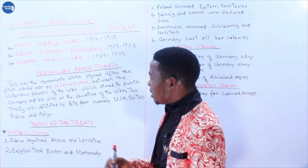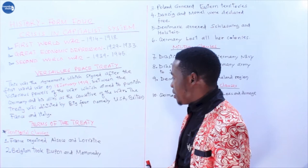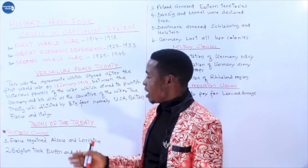During the Versailles Peace Treaty, they signed an agreement whereby the agreement was dictated by four powers — we call them the Big Four — which were USA, Britain, France, and Italy.